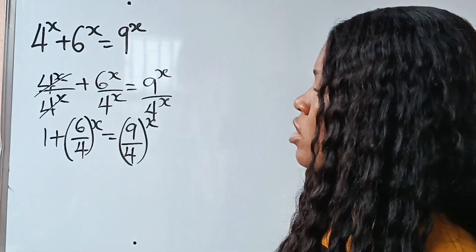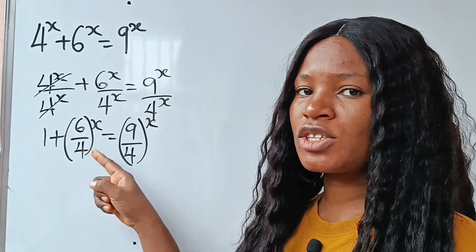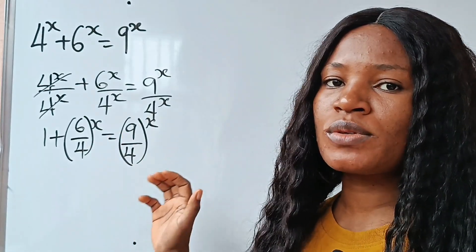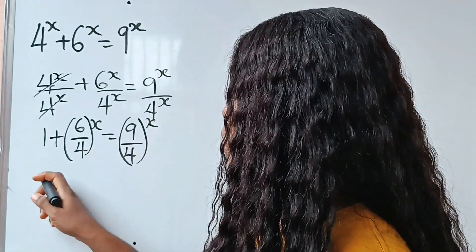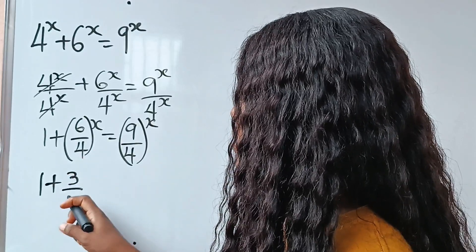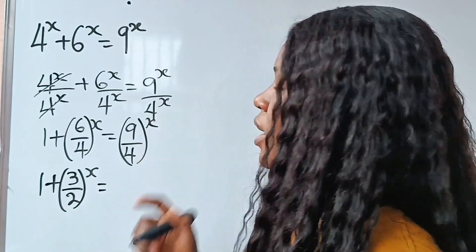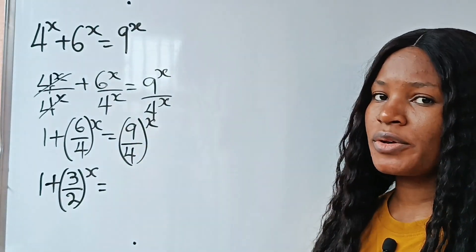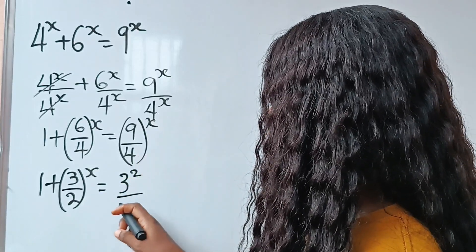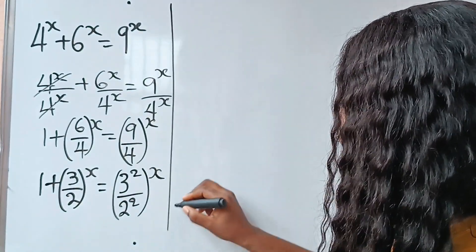Now, this and this have a common factor, and that is 2. So let's use the common factor to reduce the fraction. When 2 divides 6, we get 3. When 2 divides 4, we get 2. So raised to the power of x is equal to 9, which can be expressed as 3 squared, divided by 4, which can be expressed as 2 squared, everything to the power of x.